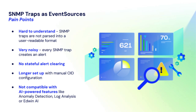There's also no stateful alerting. Probably the classic example of SNMP traps are link up and link down traps. Generally, you want the link up trap to close the alert generated by the link down trap, because you no longer have a problem. You can't do that with event sources, but you can do that with SNMP traps in logs.